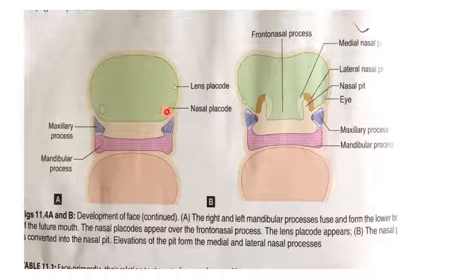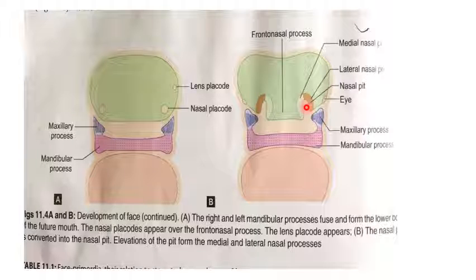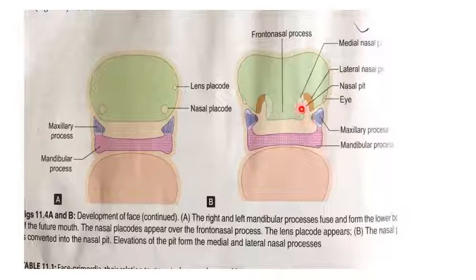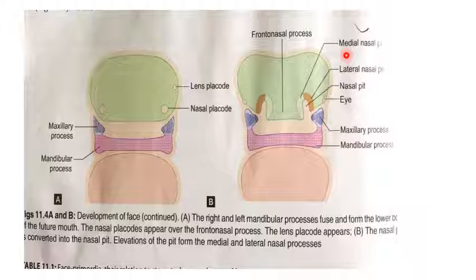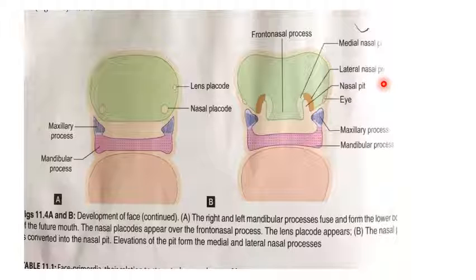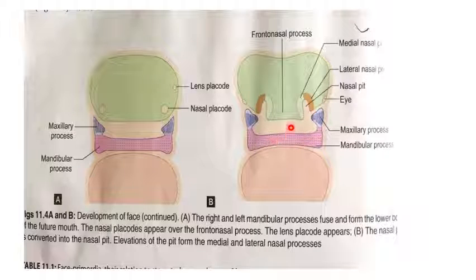These nasal placodes are formed by thickening of the ectoderm cells, which then sink and form the nasal pits, which are continuous with the primitive mouth or stomodium. Because of the sinking, there are two elevated margins — one medial elevated margin known as the medial nasal process, and one lateral known as the lateral nasal process. The maxillary process and mandibular process fuse adjacent to the primitive stomodium.